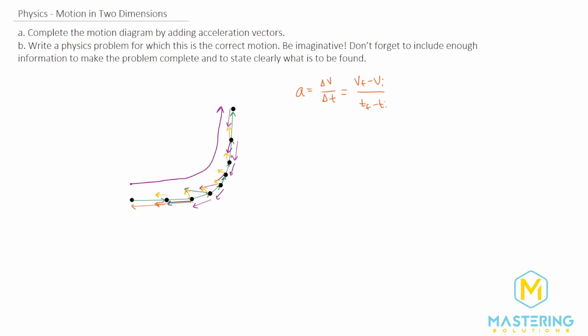For a problem, we could say exactly what we did - add the acceleration vectors and calculate the acceleration. We could make up some numbers to figure out what the acceleration would be as it's slowing down from one point. So for my problem, I'll say we're going to do exactly what we were asked to do here: add the acceleration vectors to complete the diagram.